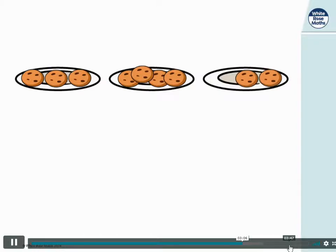How could we make these groups equal? Oh yes, that's right, we can take a cookie from the middle plate and put it into the right hand plate. Now all plates have got three cookies each, three equal groups.